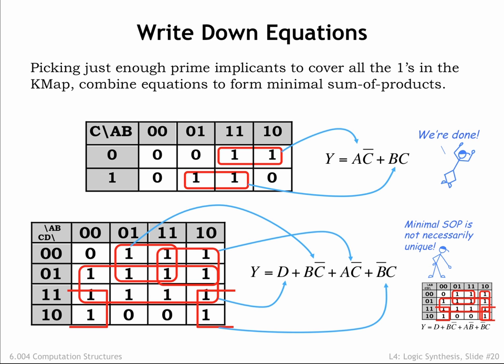Note that the minimal sum-of-products expression isn't necessarily unique. If we had used a different mix of the prime implicants when building our cover, we would have come up with a different sum-of-products expression. Of course, the two expressions are equivalent in the sense that they produce the same value of Y for any particular combination of input values. They were built from the same truth table, after all! And the two expressions will have the same number of operations.